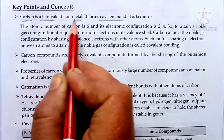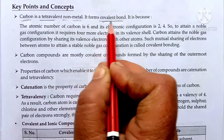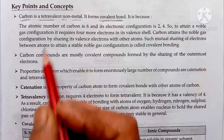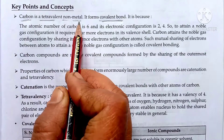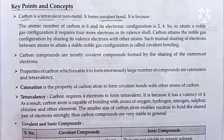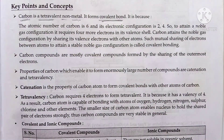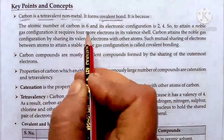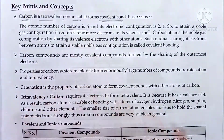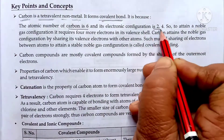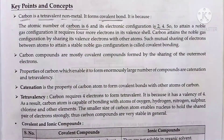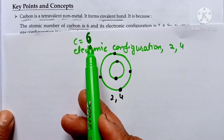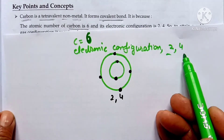The first important point is that carbon is a tetravalent non-metal. Carbon forms covalent compounds. Atoms form different types of bonds like ionic bonds and covalent bonds, but carbon forms covalent bonds. Carbon's atomic number is 6 and its electronic configuration is 2 and 4.